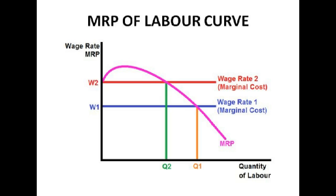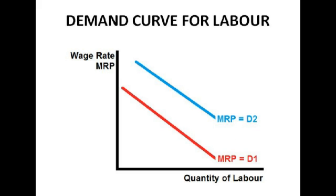This diagram basically shows that the marginal revenue product curve of labour is equal to the demand curve for labour. That downward curved slope is the demand curve for labour, and across we can see the different wage rates. We're going to employ when the wage rate — which is essentially the same as the marginal cost of employing the extra worker — is equal to the MRP. So if we've got a higher marginal cost, we're going to employ fewer workers. If the marginal revenue product of labour increases, there's going to be an increase in demand for labour because it's essentially worth more. This could happen through an increase in productivity, or if marginal product or marginal revenue increases.